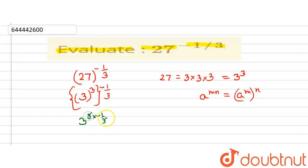So here 3 will get cancelled and the answer will be 3 to the power of minus 1.